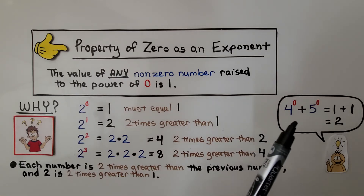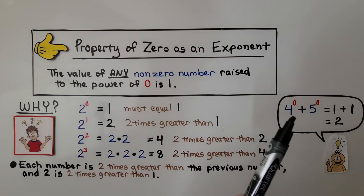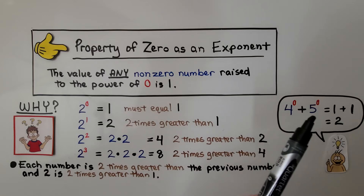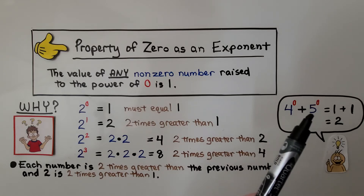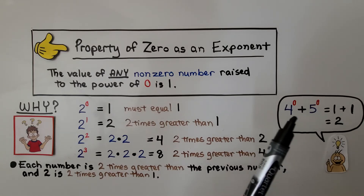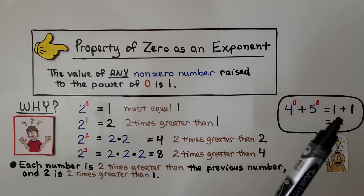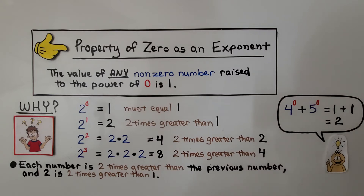If we had 4 raised to the 0 power plus 5 raised to the 0 power, they each represent 1. So we'd have 1 plus 1, which equals 2.